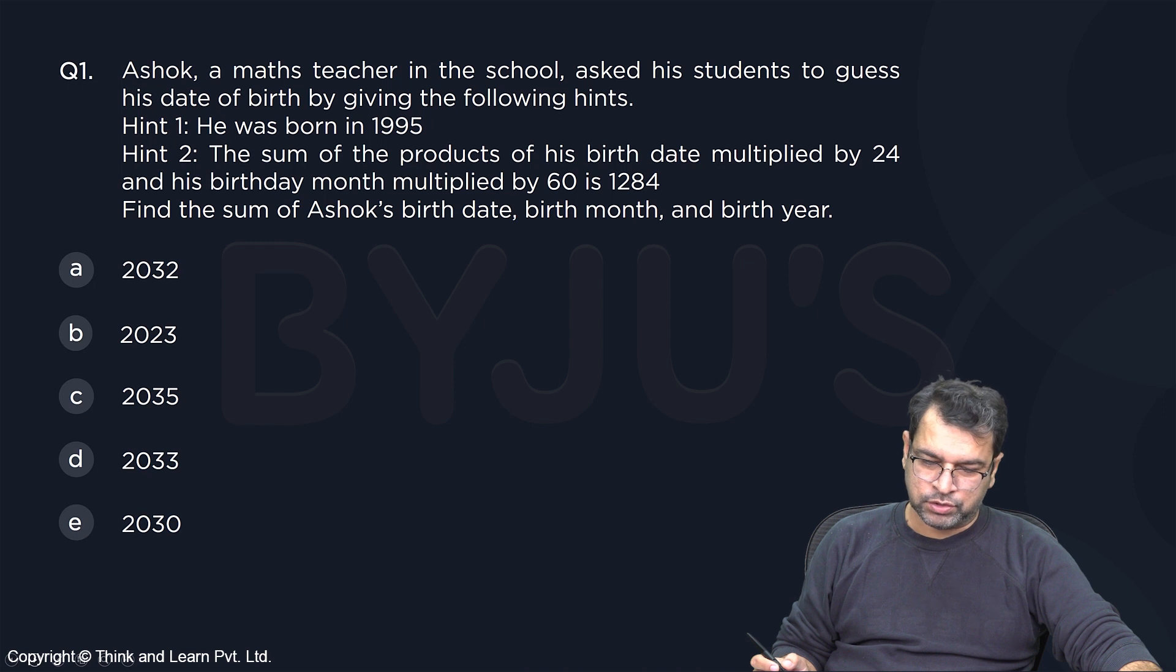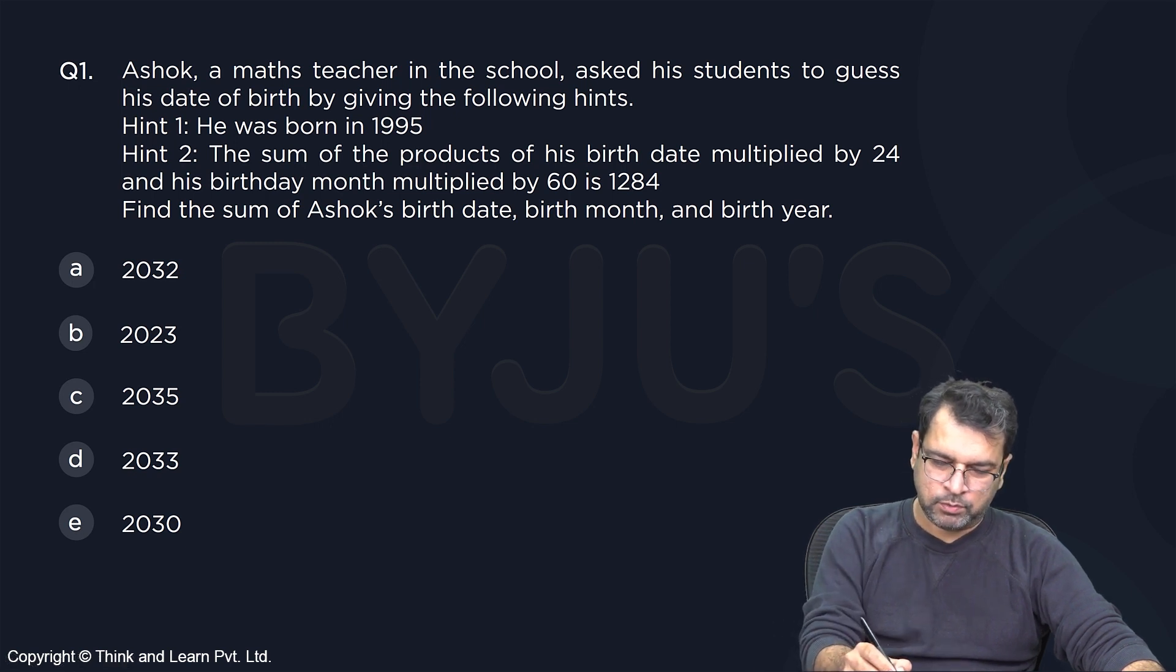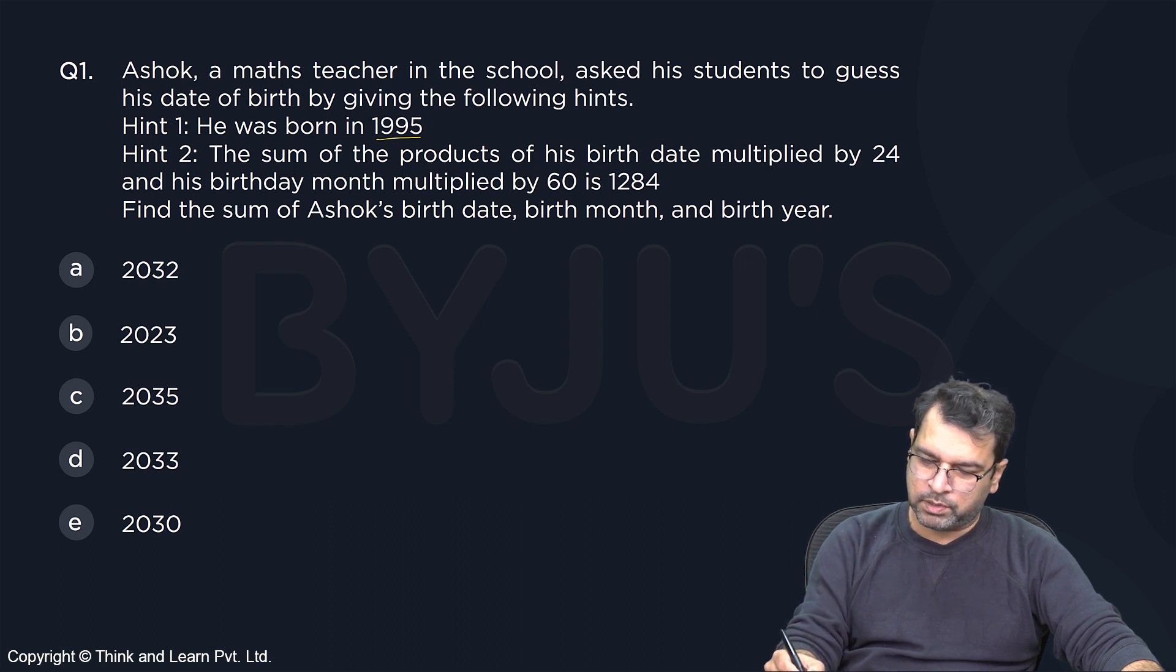Ashok, a maths teacher in the school, asked his students to guess his date of birth by giving the following hints. So first hint was that he was born in 1995. Hint 2: the sum of the products of his birth date multiplied by 24 and his birth month multiplied by 60 gives you 1284.